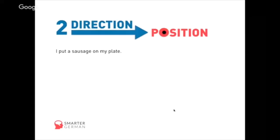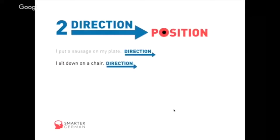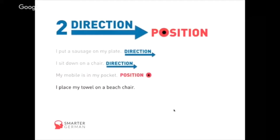A couple more quickly: 'I put a sausage on my plate' — you put it there, it's a direction. 'You sit down on a chair' — your behind is moving downwards onto the surface of a chair, it's a direction as well. 'My mobile is in my pocket' — it's stuck there, so it's a position. 'I place my towel on a beach chair' — you're putting it there, hence it's a direction.